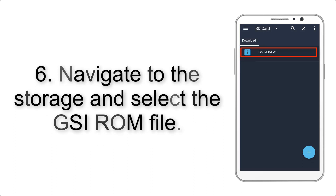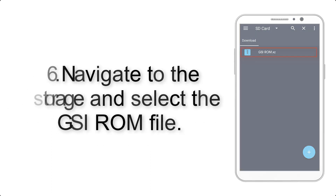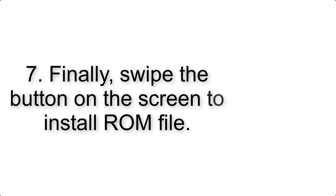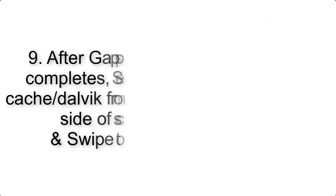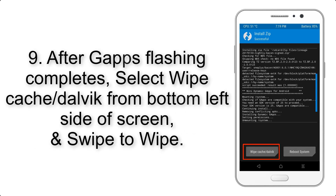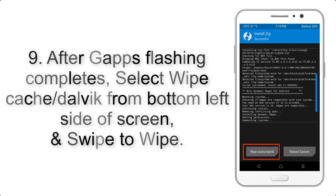Step 5: go back to the recovery main screen and tap on the Install button. Step 6: navigate to the storage and select the GSI ROM file. Step 7: swipe the button on the screen to install the ROM file.